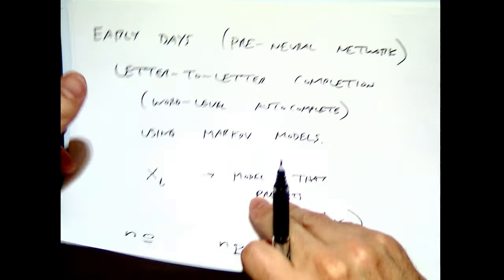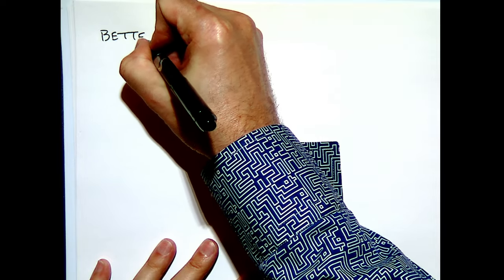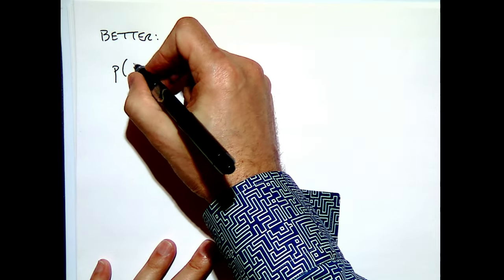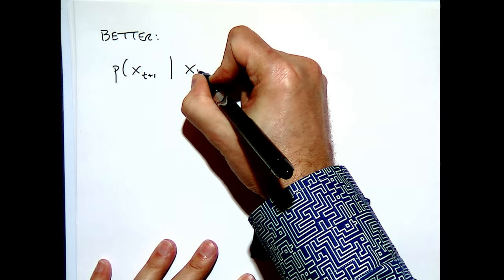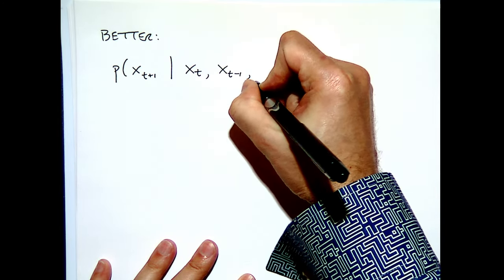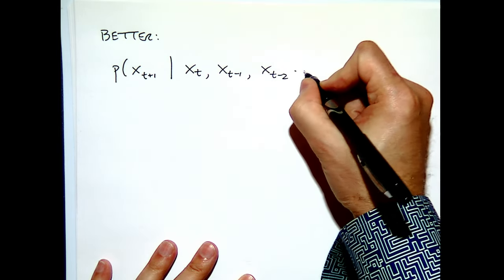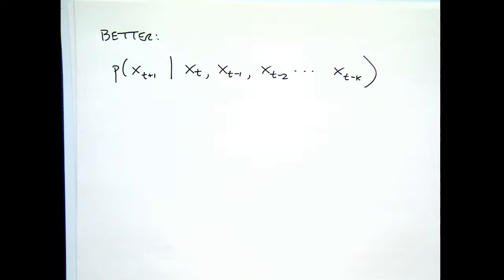A better approach is to build a model that predicts the probability of x(t+1) given not only the previous letter, but the previous two or three letters — looking back k steps. Of course, that requires more data and more memory, but it can be done.